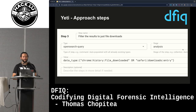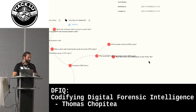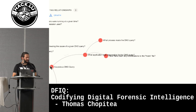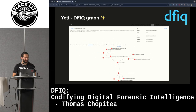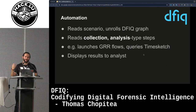We also have a graph view. You can see a scenario like 'suspicious DNS query,' then 'what application was responsible for the DNS query,' and then 'what process made the DNS query' — that's what a DFIQ scenario looks like in the database. Regarding automation, we use dftimewolf, a tool we also wrote as part of our open source stack. It reads a scenario from Yeti, unrolls the DFIQ graph — taking all facets, questions, and approaches — and selects the relevant ones.